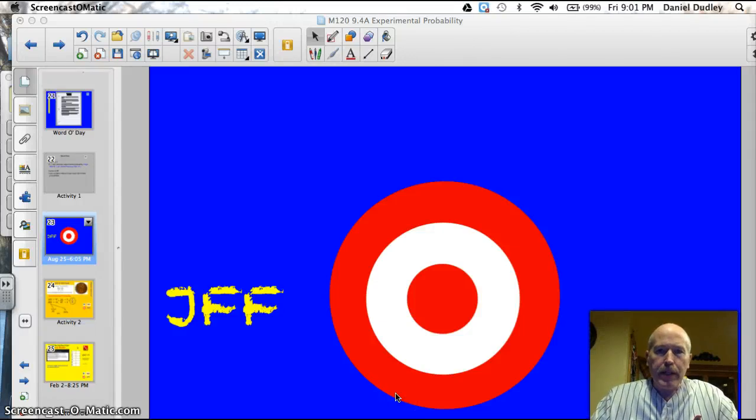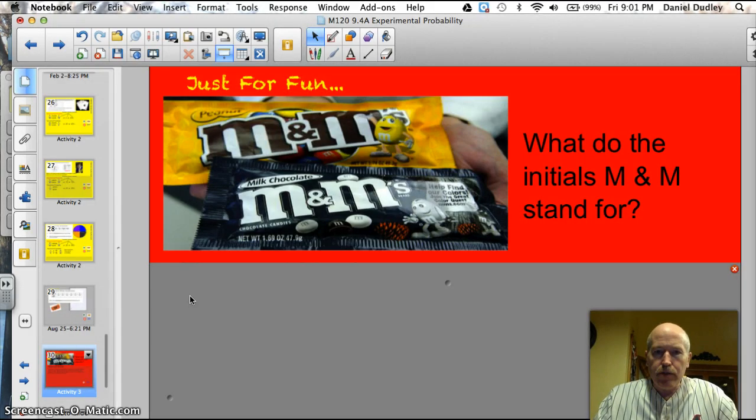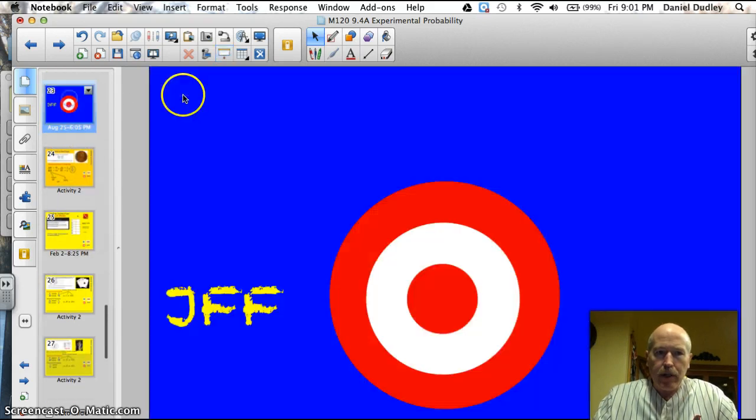Hey, Valli. Welcome back. Tonight we're going to be talking about experimental probability and theoretical probability. Let's start off with a fun trivia question, a delicious trivia question. We all know them, we all love them, M&Ms. What do the initials M and M stand for? We'll get back to that after our target.